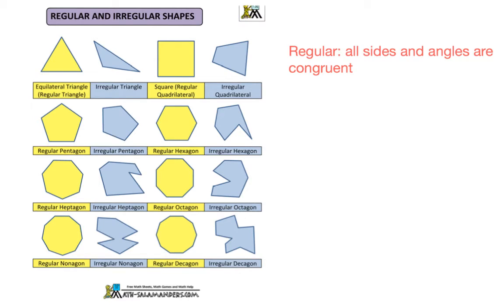You also need to know the difference between regular and irregular polygons. Regular polygons are ones where all sides and angles are congruent. Irregular polygons are if that's not the case — it's either one or the other, you can't be both. Here are some examples of regular and irregular polygons for you to see.